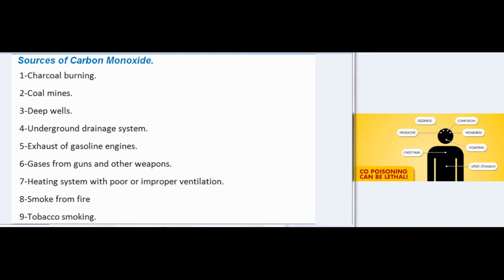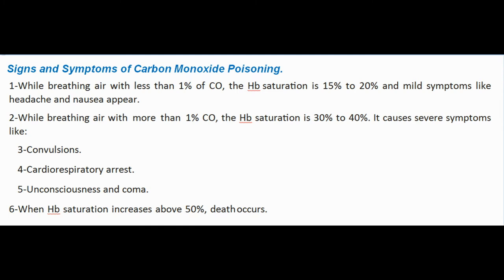Sources of carbon monoxide: (1) charcoal burning, (2) coal mines, (3) deep wells, (4) underground drainage systems, (5) exhaust of gasoline engines, (6) gases from guns and other weapons, (7) heating systems with poor or improper ventilation, (8) smoke from fire, (9) tobacco smoking.